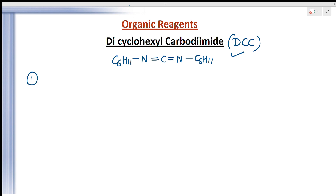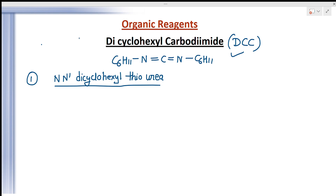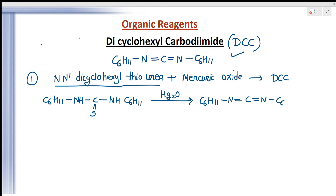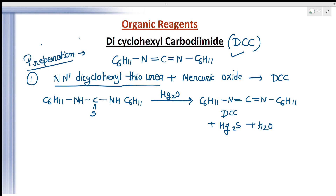DCC can be prepared by the oxidation of N,N'-dicyclohexyl thiourea with mercuric oxide. The reaction proceeds as: C6H11-NH-C(=S)-NH-C6H11, oxidized with HgO, giving C6H11-N=C=N-C6H11 (DCC), plus HgS plus H2O. This is the first preparation method.